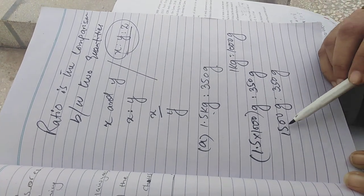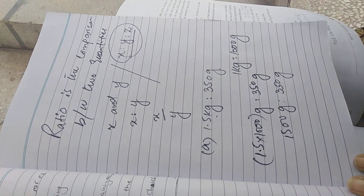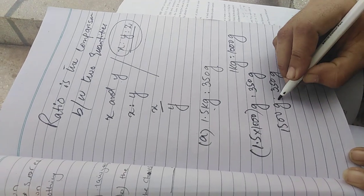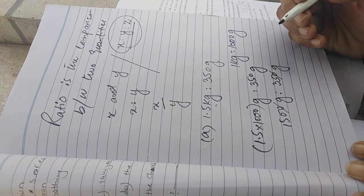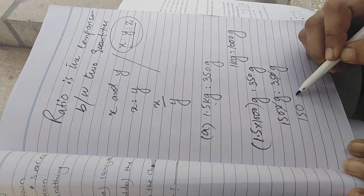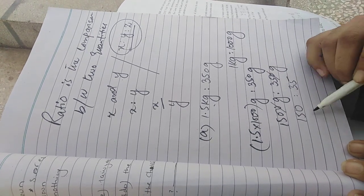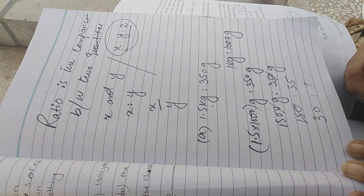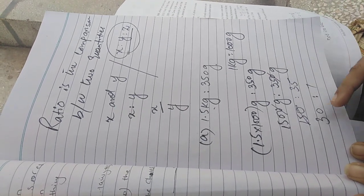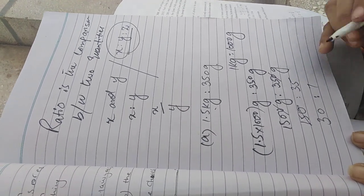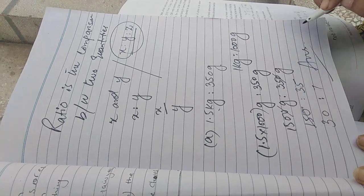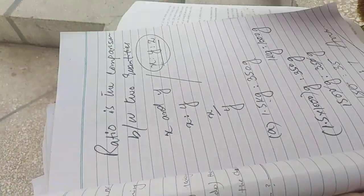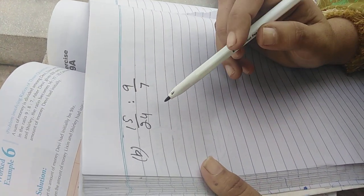Now we have to simplify. We can cut zero with zero. Here it remains 150 and 35. We can divide these both numbers with 5: 5 threes are 15, 5 sevens are 35. Now we get 30 and 7. Further we cannot divide these two numbers with the same number, so this is our answer.